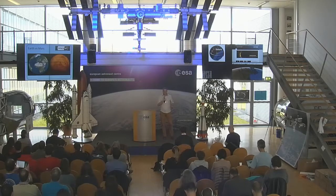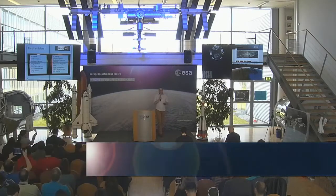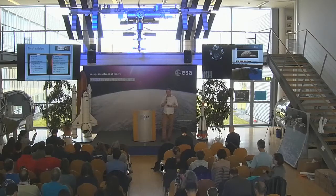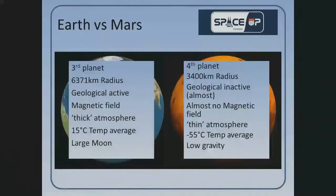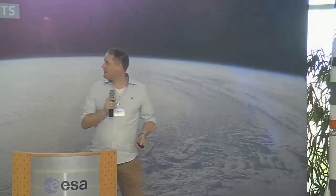Earth and Mars - what are the differences? One is warmer than the other, one is smaller, one has a big moon, etc. There's one important thing to realize: Earth is a very dynamic planet, and Mars is geologically quite dead. It probably has to do with the molten core and the big moon that we have. There are some similarities - it's a rocky planet we can walk on, it has geological features we can recognize, and importantly it has seasons as well.